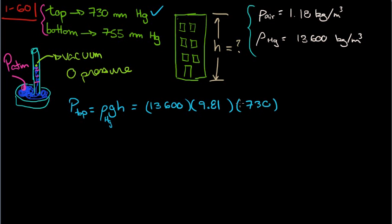Oh and be careful with your units. This is in meters per second squared, this is in kilograms per meter cubed, so not to confuse meters with millimeters, you might as well put it in meters, which is 0.730 meters. That should give you 97.39 kilopascals.